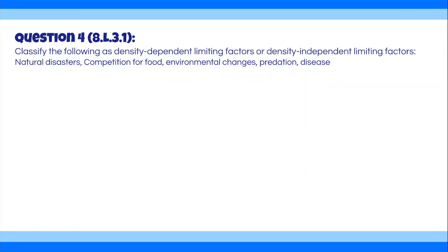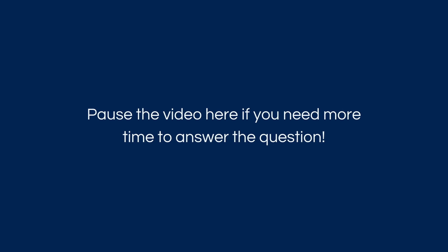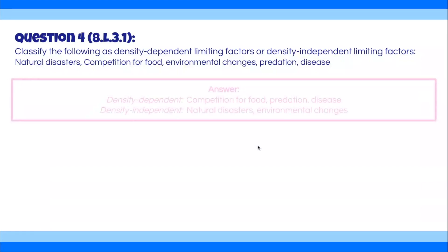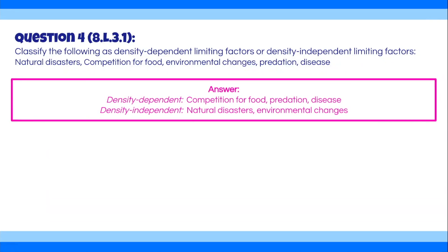Question 4. Classify the following as density-dependent or density-independent limiting factors: natural disasters, competition for food, environmental changes, predation, and disease. The density-dependent factors are competition for food, predation, and disease. The density-independent factors are natural disasters and environmental changes.